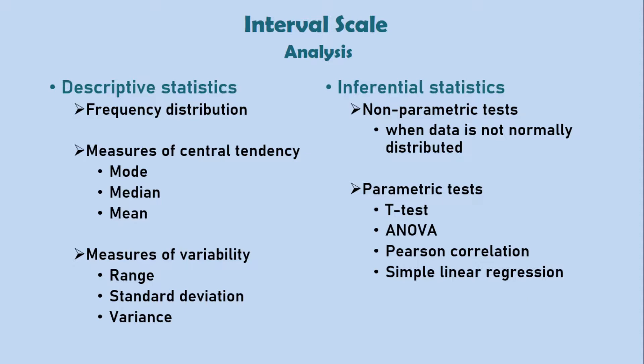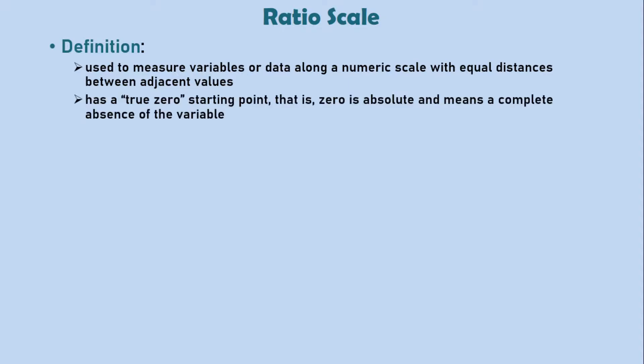The highest level of measurement is the ratio scale, which measures variables or data along a numeric scale with equal distances between adjacent values and also has a true zero starting point. Every characteristic of an interval scale applies to a ratio scale, except that on a ratio scale, zero is an absolute number. This implies that on a ratio scale, zero means that the variable under study is absent or does not exist. Because of this, ratio scale variables cannot have negative numbers. Also note that we can actually compare values of variables on a ratio scale in that they can be multiplied or divided. Since there is a common reference point, which is zero.